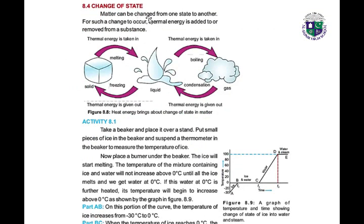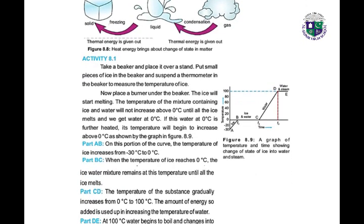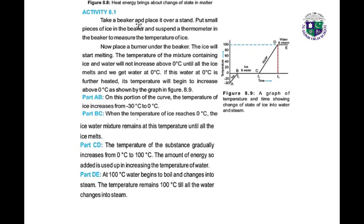Matter can be changed from one state to another; for such a change, thermal energy is added to or removed from a substance. In Activity 8.1: take a beaker, place it over a stand, put some pieces of ice in the beaker, and suspend a thermometer to measure the temperature. Place a burner under the beaker — the ice will start melting. The temperature of the ice-water mixture will not increase above 0°C until all the ice melts. If this water at 0°C is further heated, its temperature will begin to rise above 0°C.